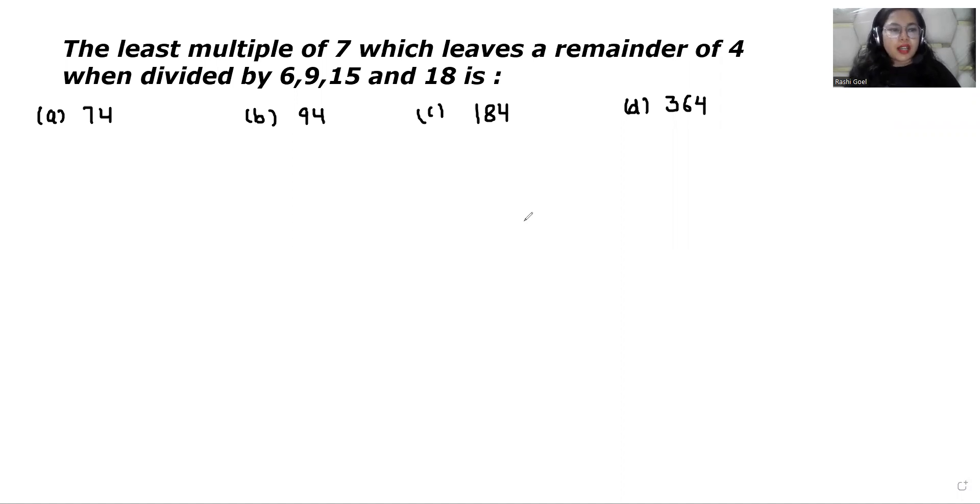Our options are 74, 94, 184 and 364. Let's start with today's video and check the solution. We have to find the number which is completely divisible by 7 and gives a remainder of 4.